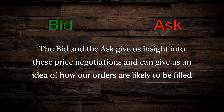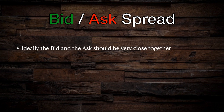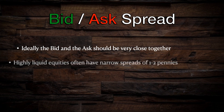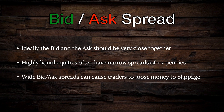Whenever you are preparing to place a trade, it is important to look at how far apart the bid and the ask are from one another. This difference is referred to as the bid-ask spread. In an ideal situation, the bid and the ask will be very close together. In the case of heavily traded, highly liquid stocks and exchange-traded funds, the bid-ask spread is often only one or two pennies wide, which makes filling market orders at fair prices very easy. But sometimes the bid-ask spread can be very far apart, which makes filling an order much more difficult and can cause traders to lose money to slippage.